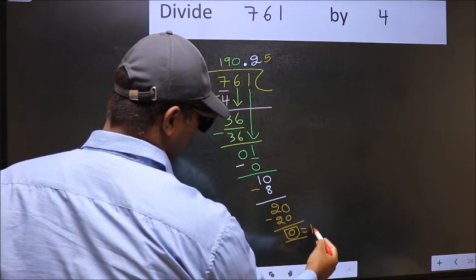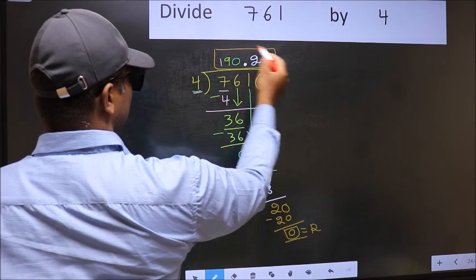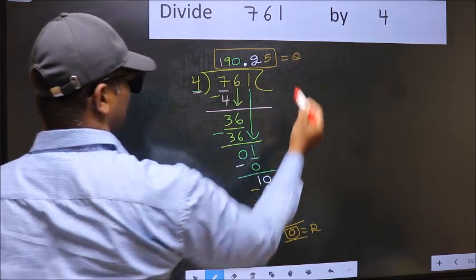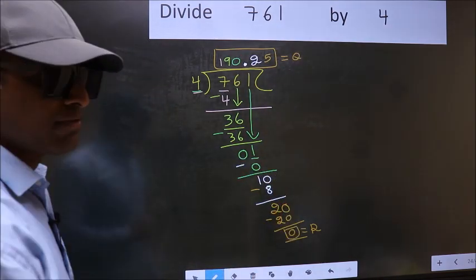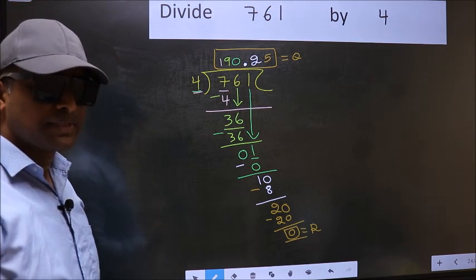So this is our remainder. And this is our quotient. Did you understand where the mistake happens? You should not do that mistake.